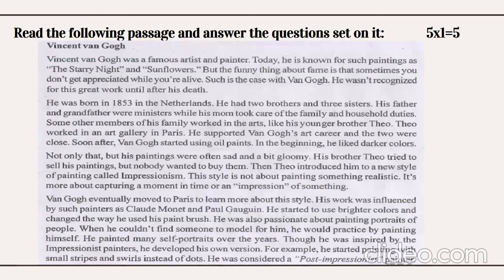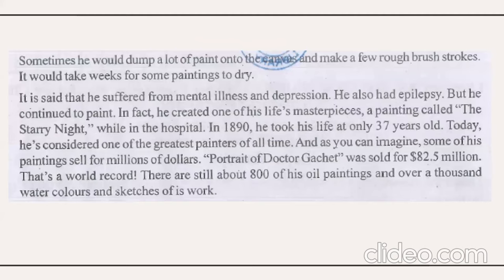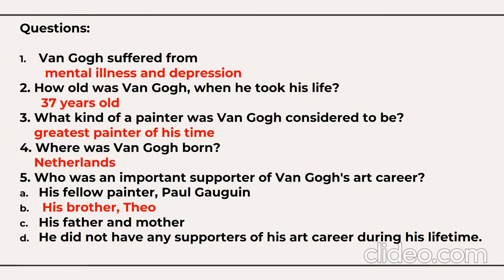Question number one: you have to read the passage and answer five questions based on it. You can pause the video and read the passage carefully — two or three times until you understand. The five questions may include one-word answers, one-sentence answers, multiple choice questions, fill-in-the-blank, true or false, or giving a suitable title to the passage. Select only the required answer, not the whole paragraph. The comprehension passage carries a weightage of five marks.